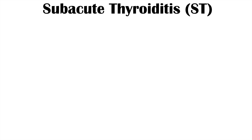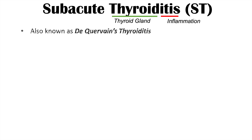Subacute thyroiditis — if we look at the word 'thyroiditis,' 'thyroid' refers to the thyroid gland and '-itis' refers to inflammation. So this is a condition involving inflammation of the thyroid gland. It's also known as de Quervain's thyroiditis. We're going to talk a bit more about some of the subcategorizations of this condition later on in this lesson.